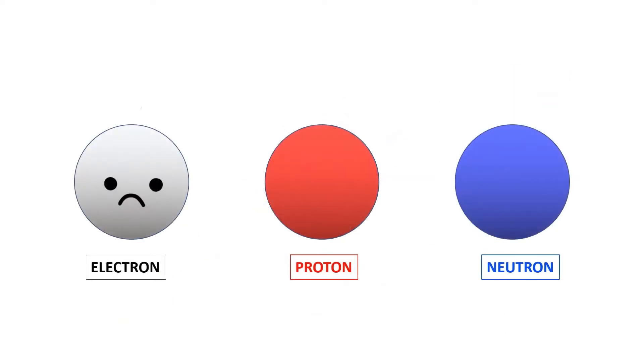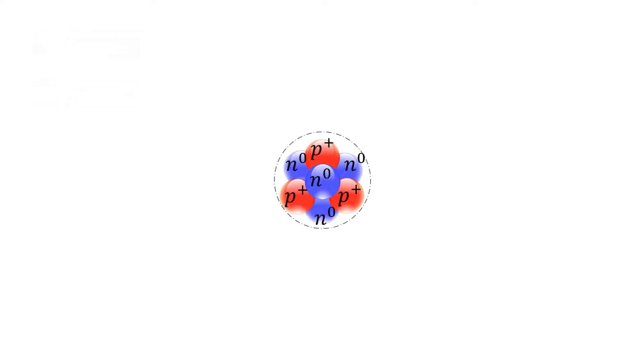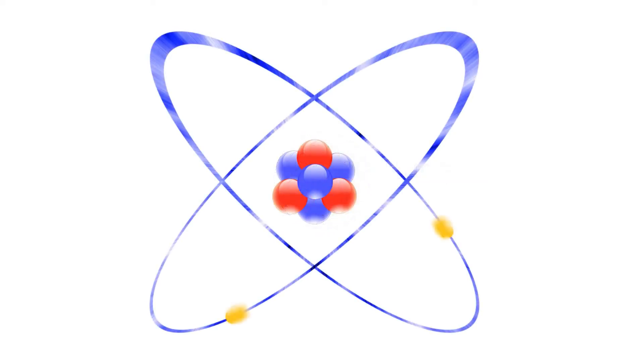Electrons have a negative charge, protons have a positive charge, and neutrons have no electric charge at all. Neutrons and protons, commonly called nucleons, are bound together in the center of an atom called the nucleus, surrounded by a cloud of negatively charged electrons.